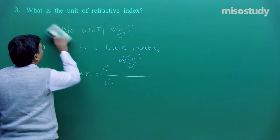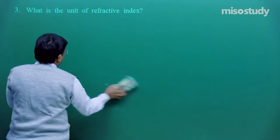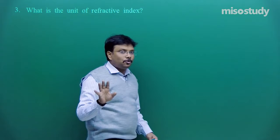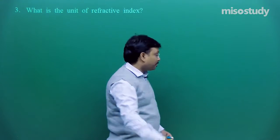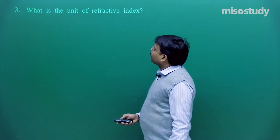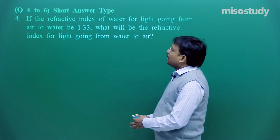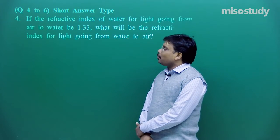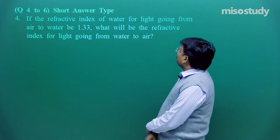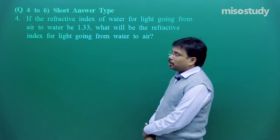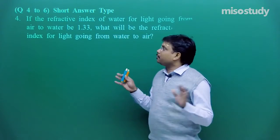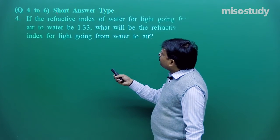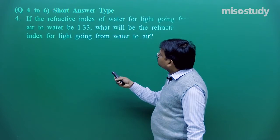So this is the answer of this question. And suppose this question is in your question paper in exams, simply mention it is the ratio of two velocities. So no unit. Finish. After that question number 4. Now, if the refractive index of water for light going from air to water is 1.33, what will be the refractive index for light going from water to air? Now, first let us try to visualize it. First thing is that this is not very short answer type question, it is short answer type question.